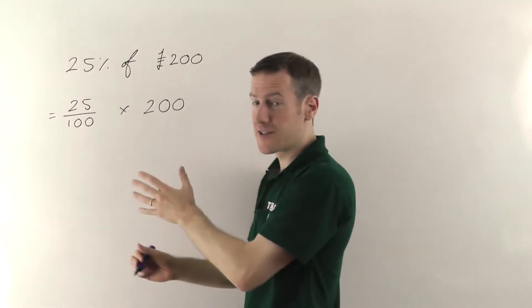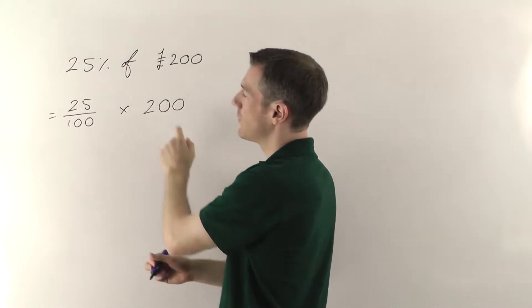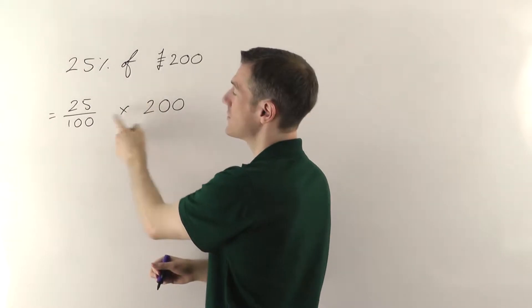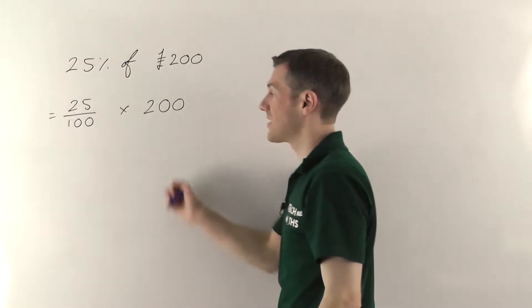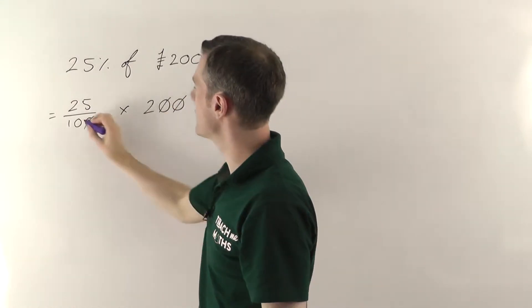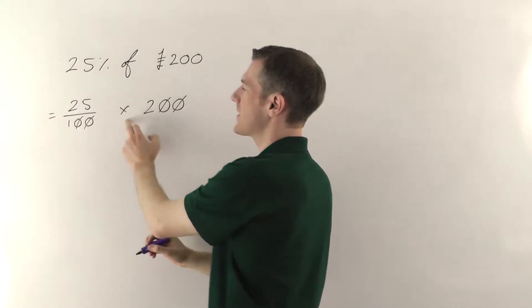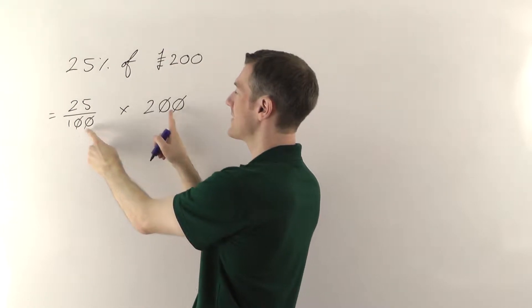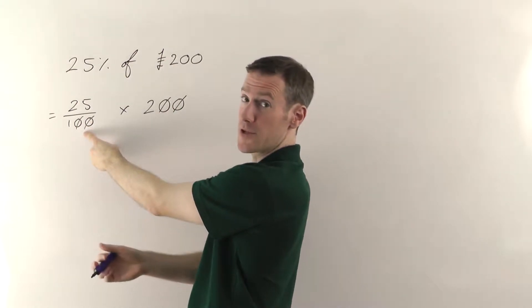Now if you remember from finding fractions of amounts or multiplying fractions by whole numbers, you can do the division first if you want to. So 200 divided by 100 that just gives you 2. Another way you could look at that if you cancel that 0 with that 0 and that 0 with that 0. This 200 is effectively multiplying on the top so you can think of this as being on the top of the fraction which is why I'm allowed to cancel these zeros because those are on the top and those are on the bottom.